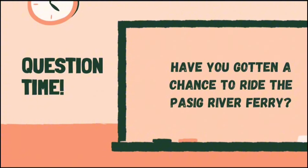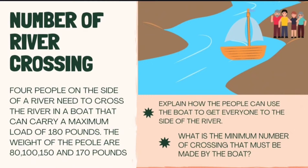Have you got a chance to ride a Pasig River Ferry? The Pasig River Ferry is a mode of transportation via water within Metro Manila. It travels through the Pasig River and Marikina River, passing through some of the cities within the region like Taguig, Marikina, Pasig, Manila, Magdaluyo, and Bayad. That connects with our second mathematical problem: four people on the side of a river need to cross in a boat that can carry a maximum load of 180 pounds. The weights of the people are 80, 100, 150, and 170 pounds. The questions are: explain how the people can use the boat to get everyone to the other side of the river, and what is the minimum number of crossings that must be made by the boat?